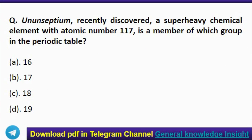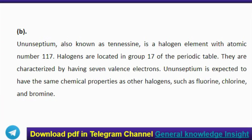The next question: the recently discovered super-heavy chemical element with atomic number 117 is a member of which group in the periodic table? Ununseptium, also known as tennessine, is a halogen element with atomic number 117. Halogens are located in group 17 of the periodic table and are characterized by having seven valence electrons. Ununseptium is expected to have the same chemical properties as other halogens such as fluorine, chlorine, and bromine.